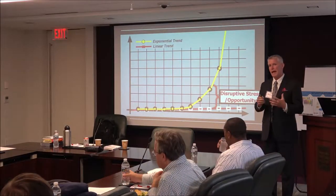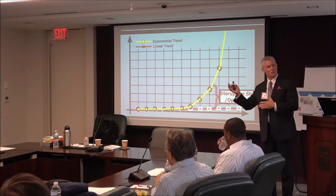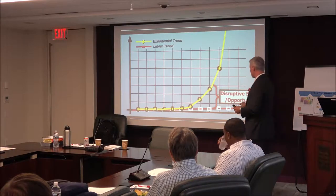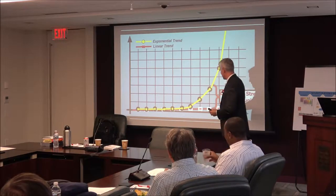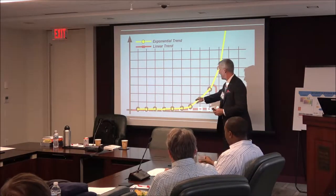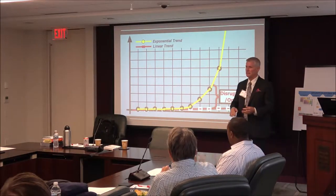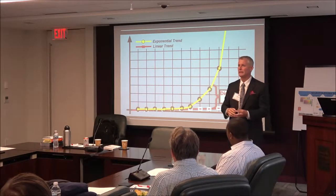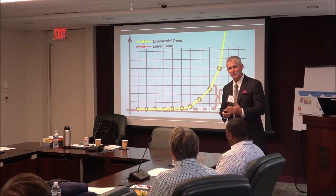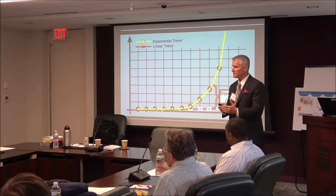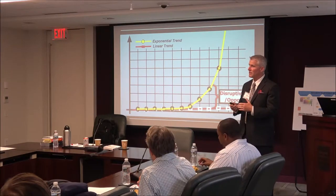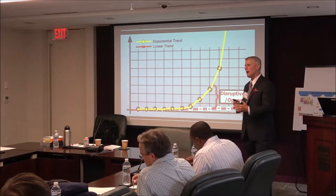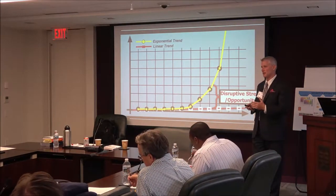I want to talk about what it means to have exponential growth versus linear growth. Linear growth would be on this bottom red line, and exponential growth is the traditional hockey stick. When we're thinking linear, we're thinking in 5%, 6%, 10% growth increments. When we're thinking exponentially, we're thinking: how can we make a 10x change?